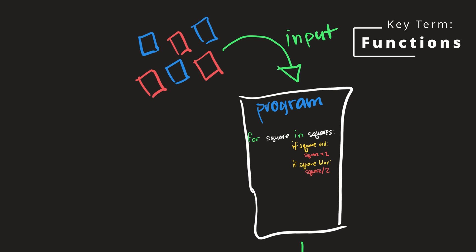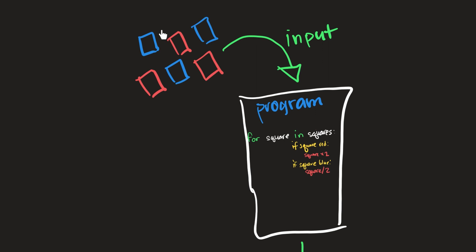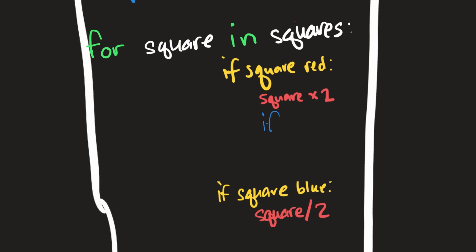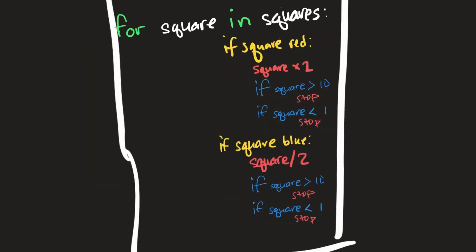Let's imagine that for both red and blue squares we don't want the size to exceed 10 or go below one. Since this constraint is shared between both, we don't want to write the code twice. We don't want to have to write this under each if statement — that would be duplicate code. But programming languages give us another magical power that allows us to avoid writing duplicate code.